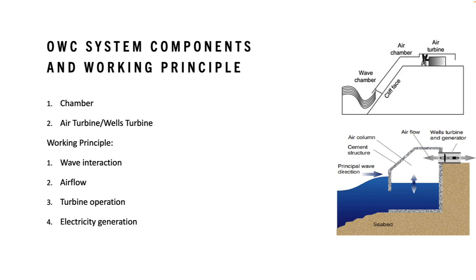The oscillating air flow drives the turbine blades, causing them to rotate. The turbine is specifically designed to operate effectively with variable air flows, which makes it suitable for the fluctuating conditions in the chamber. The rotating turbine is connected to a generator, which converts the mechanical energy of the turbine into electrical energy. The generated electricity can be fed into the local power grid or used for specific applications.